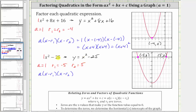Which means x squared minus 25 is equal to one times the quantity x minus negative five, times the quantity x minus five. Simplifying,